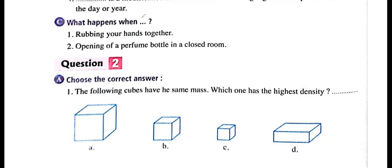Opening a perfume bottle in a closed room: since all molecules are in continuous motion, this leads to the perfume spreading all over the room. So wherever you stand in the room, you can smell it. The odor of the perfume spreads all over the room because the molecules of the perfume are in continuous motion.